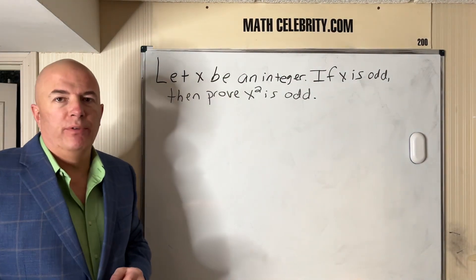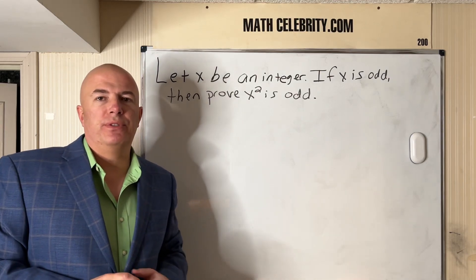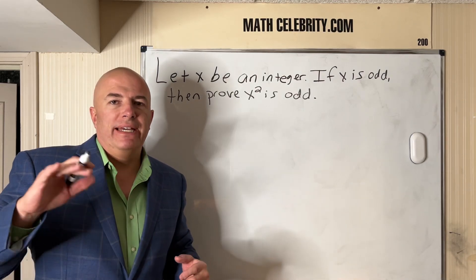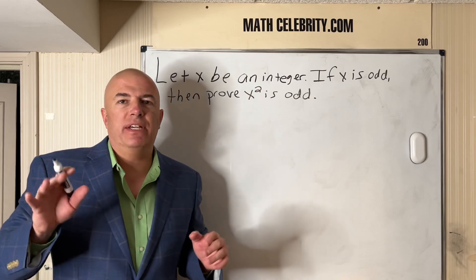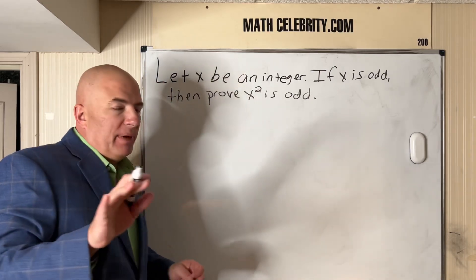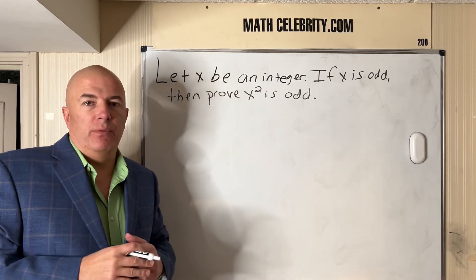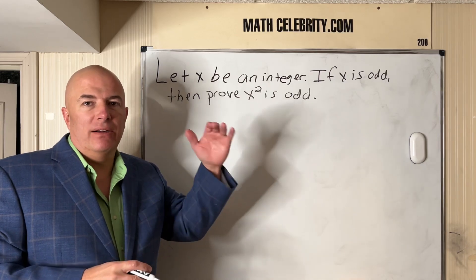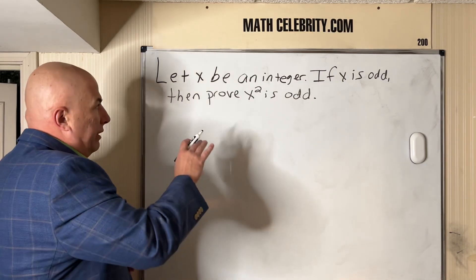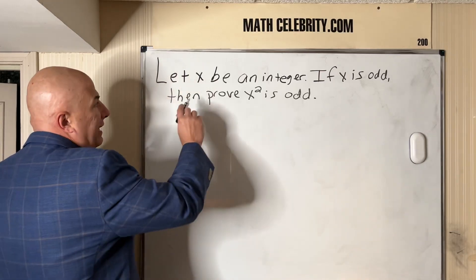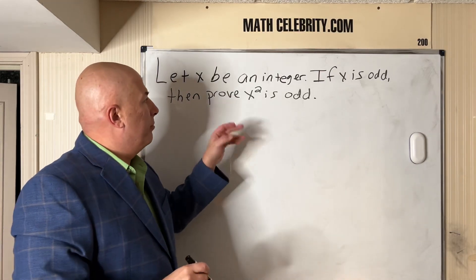All right, let's talk about a fun proof here that will get you introduced to the concepts of even and odd numbers and something called abstraction. The best mathematicians use abstraction, which means thinking at a higher level than the problem. So we'll introduce the problem first: let x be an integer. If x is odd, then prove x² is odd.